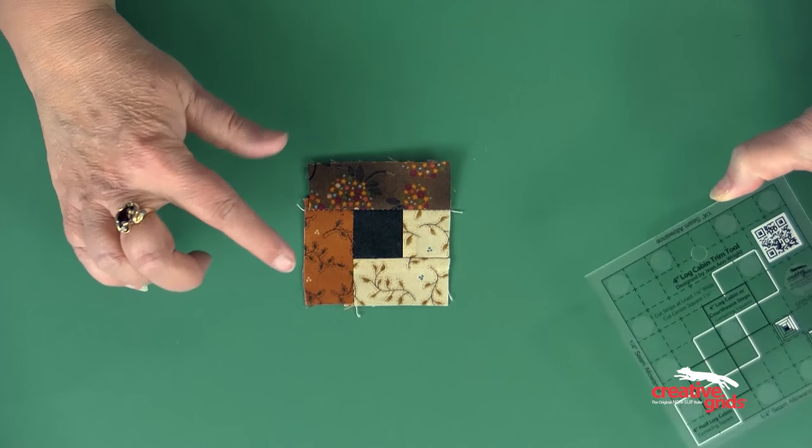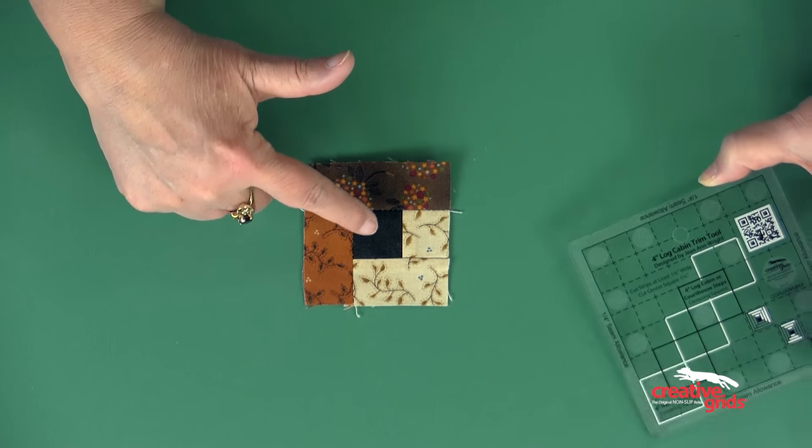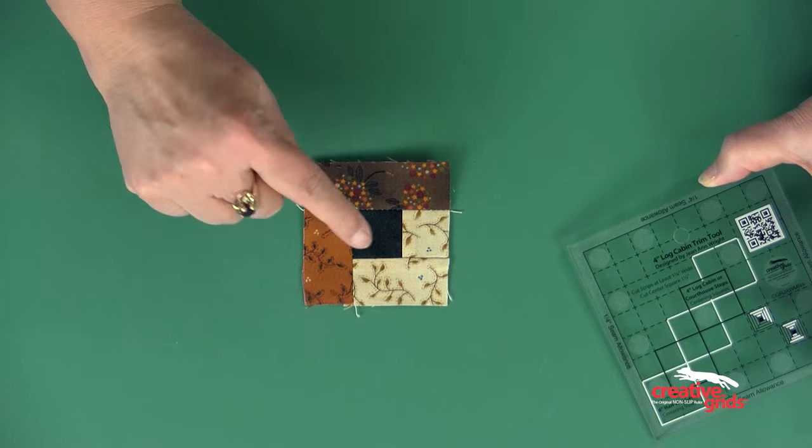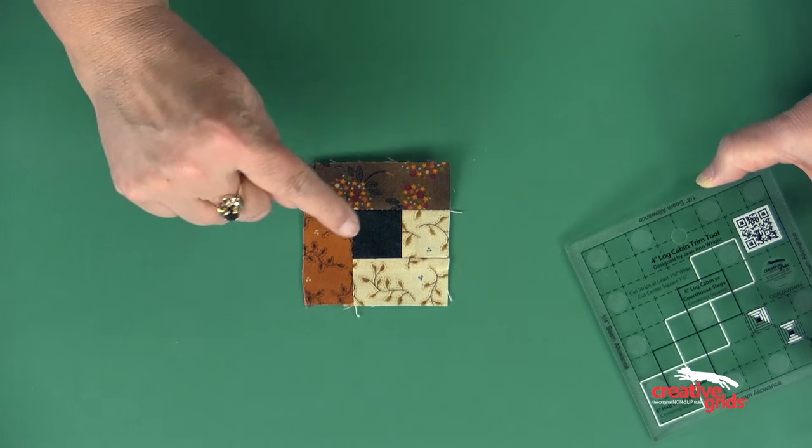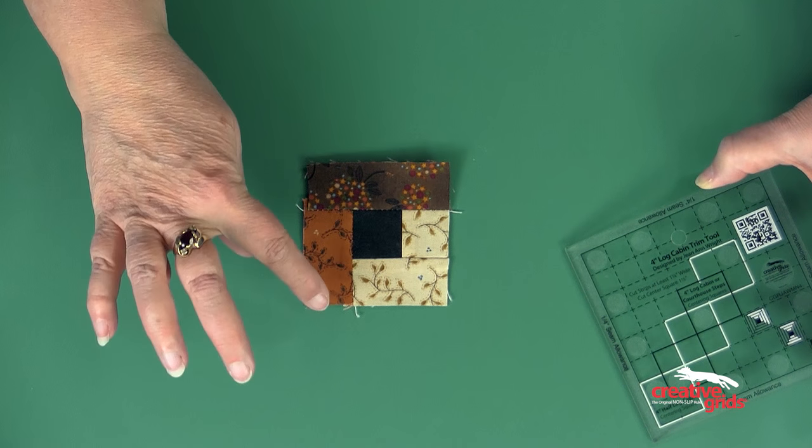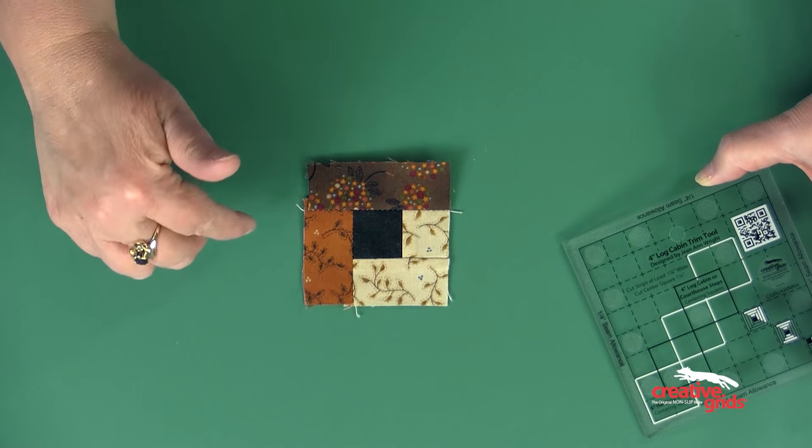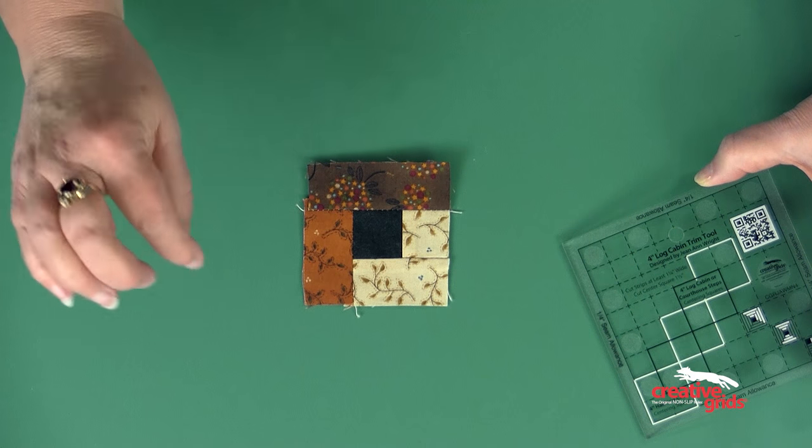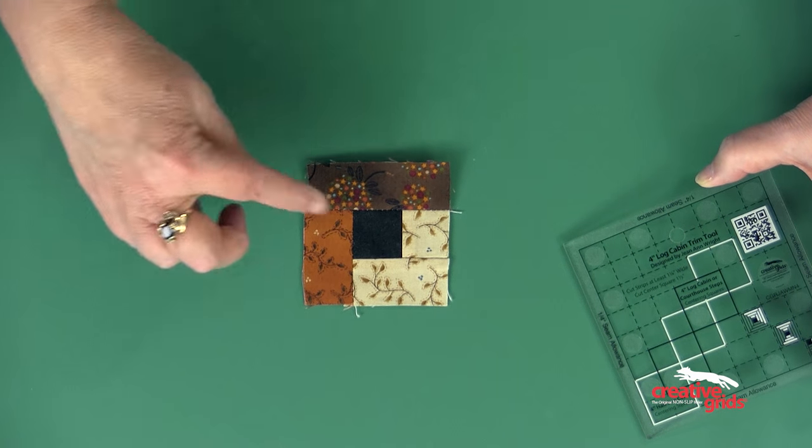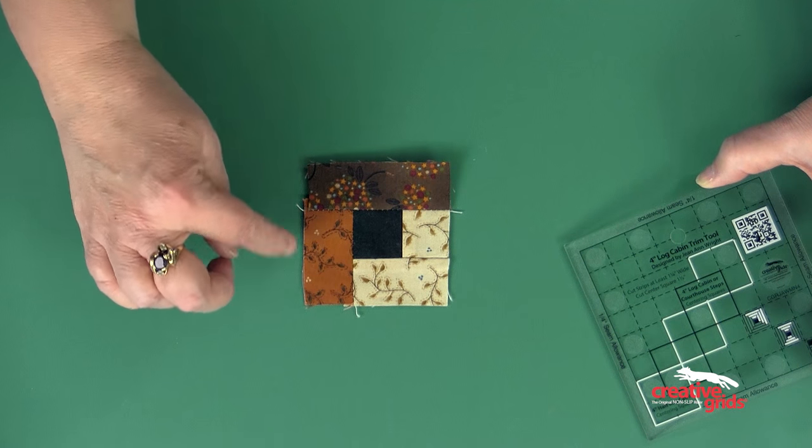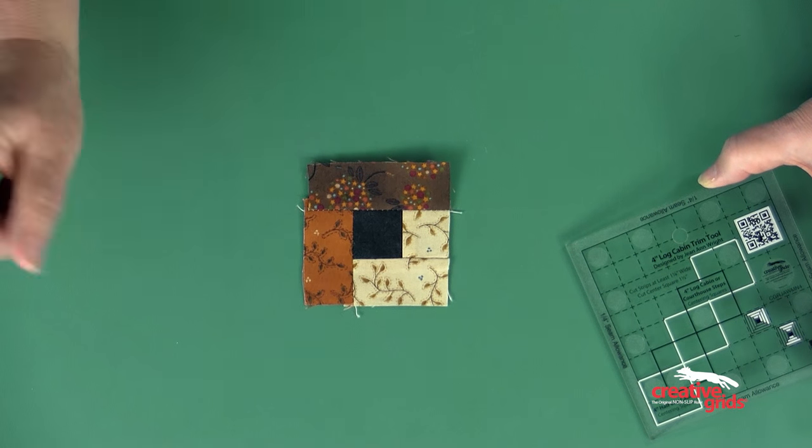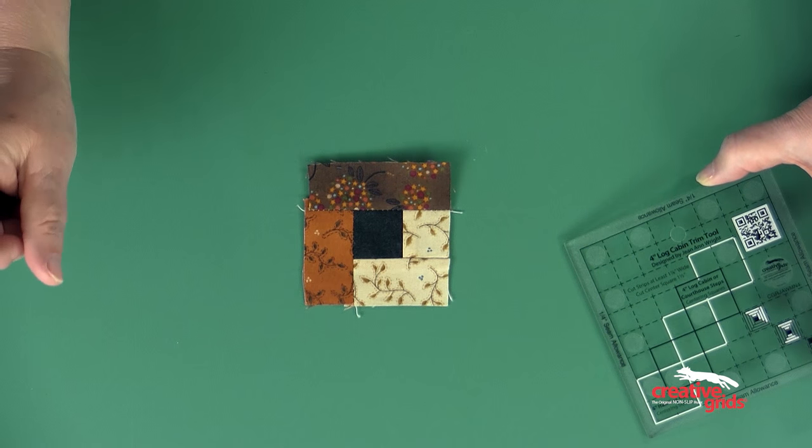Here is my first square. The center square is one and a half inches. That is printed right on the ruler so you know exactly what size you need to cut. The strips need to be cut one and a quarter inches, which gives you about a quarter of an inch that can be trimmed to make perfect logs each time and allows for any discrepancy in sewing, pressing, or cutting.